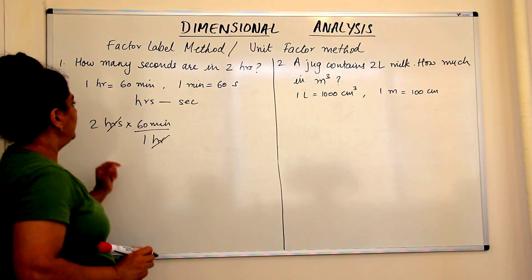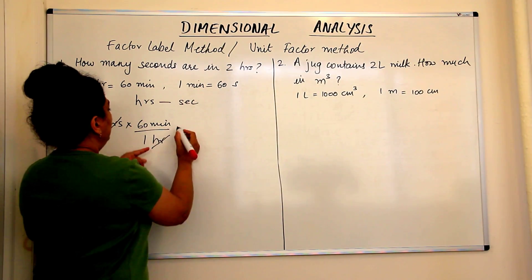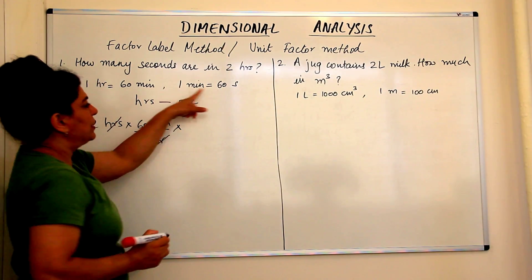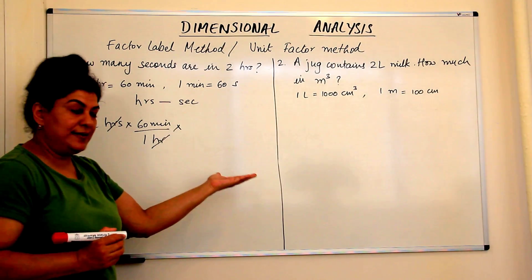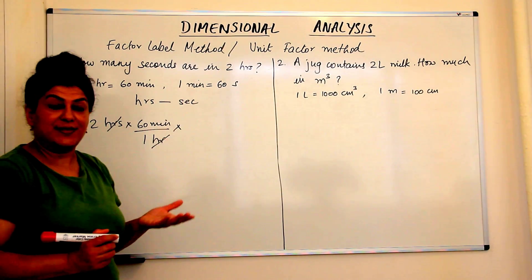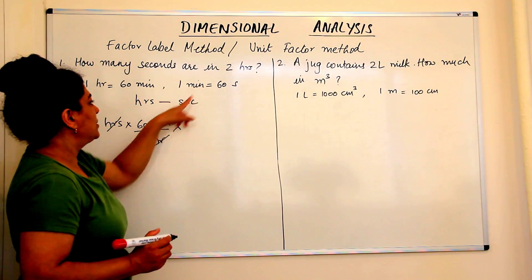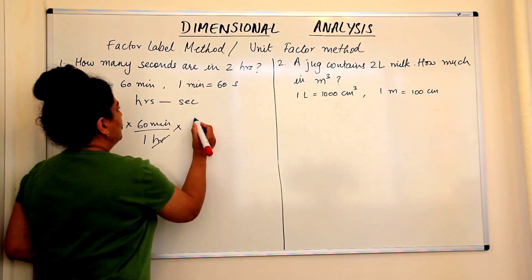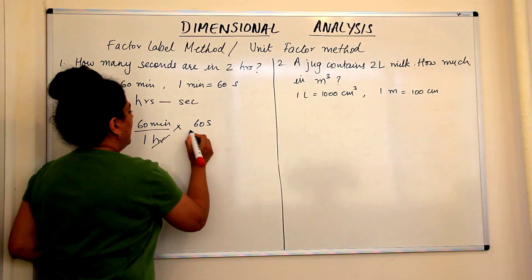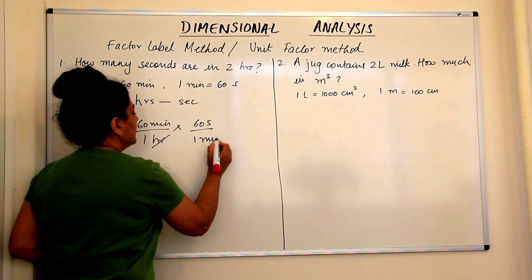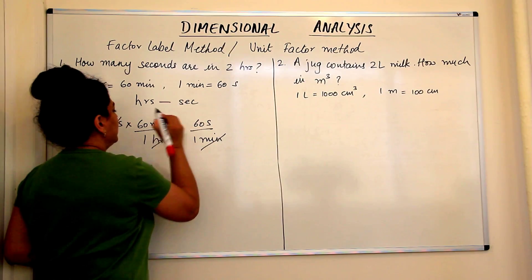The hour is cancelled out here and then we multiply by a conversion factor so that we get the seconds and the minutes are now cancelled. So for this equation, what is the conversion factor? The minutes should come in the denominator. So 60 seconds upon one minute and the minute is now cancelled out.